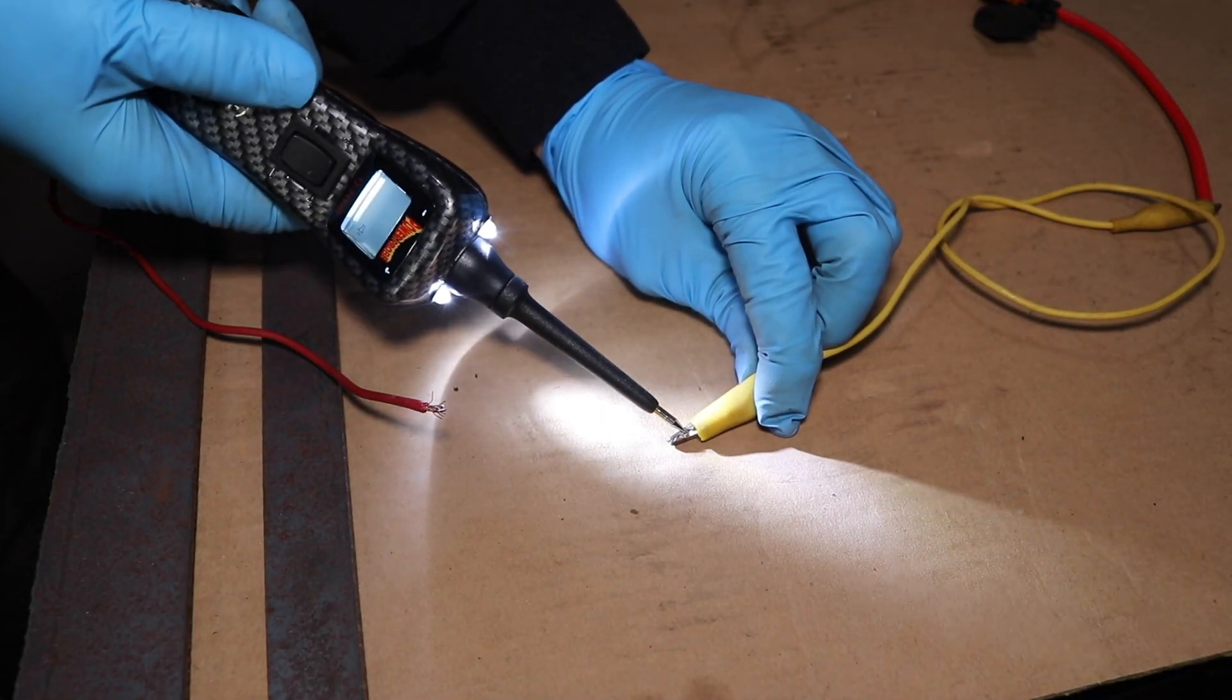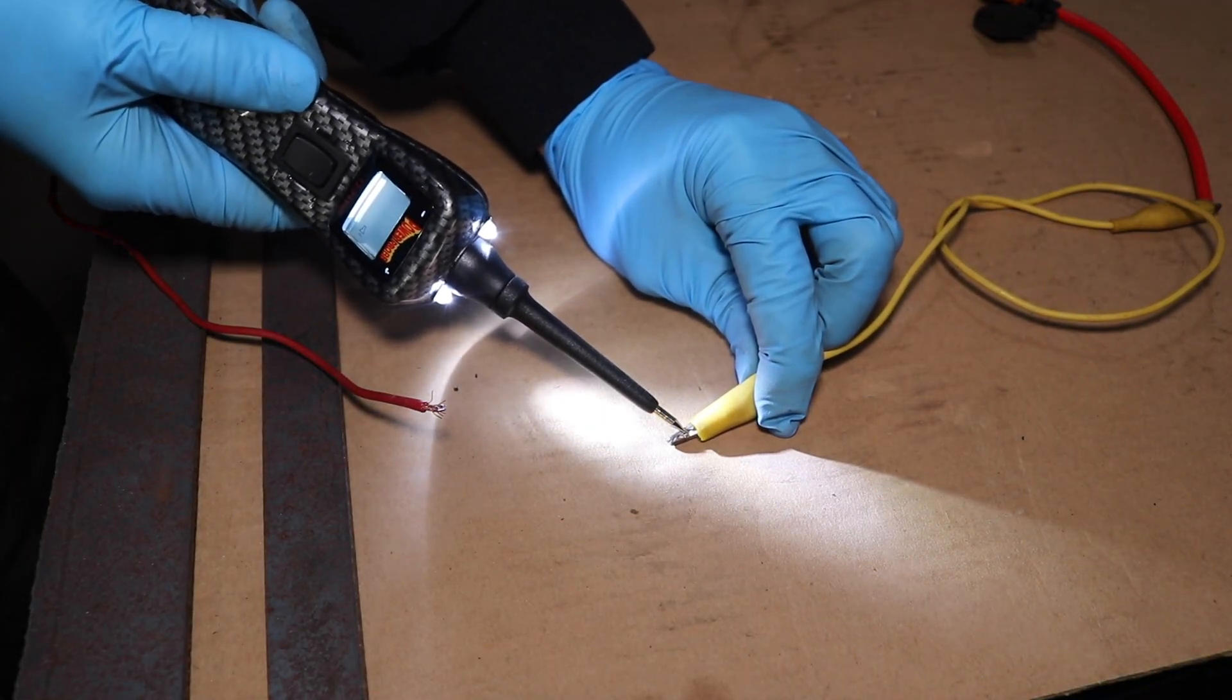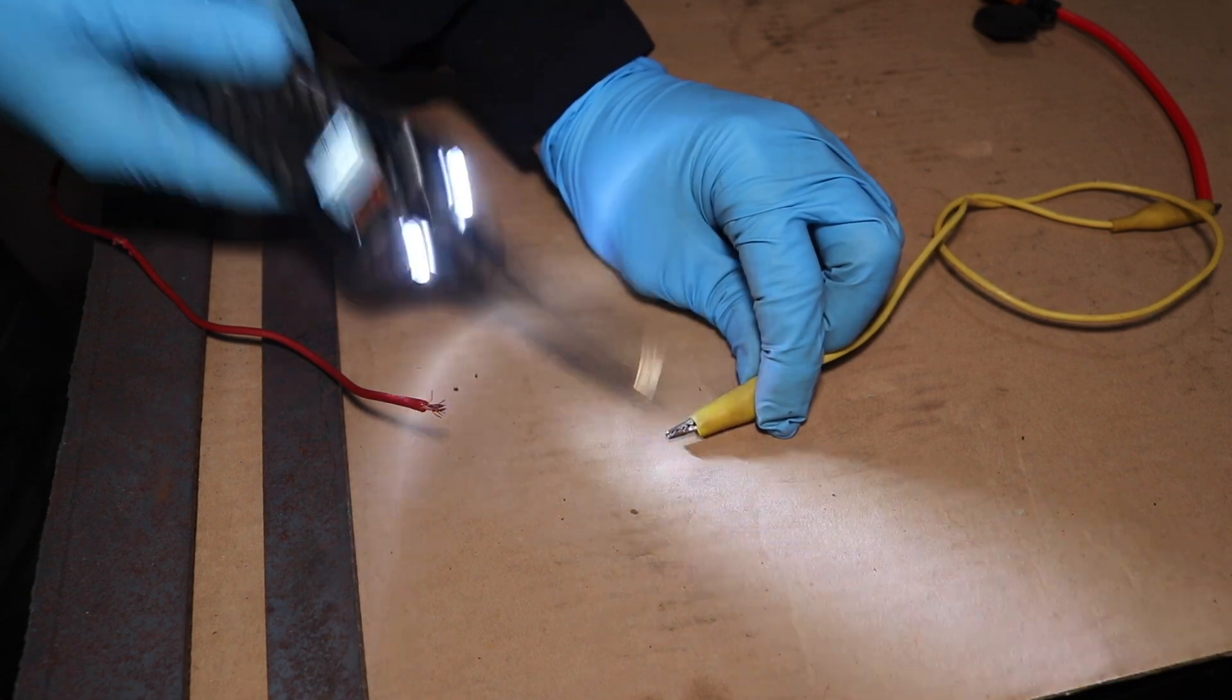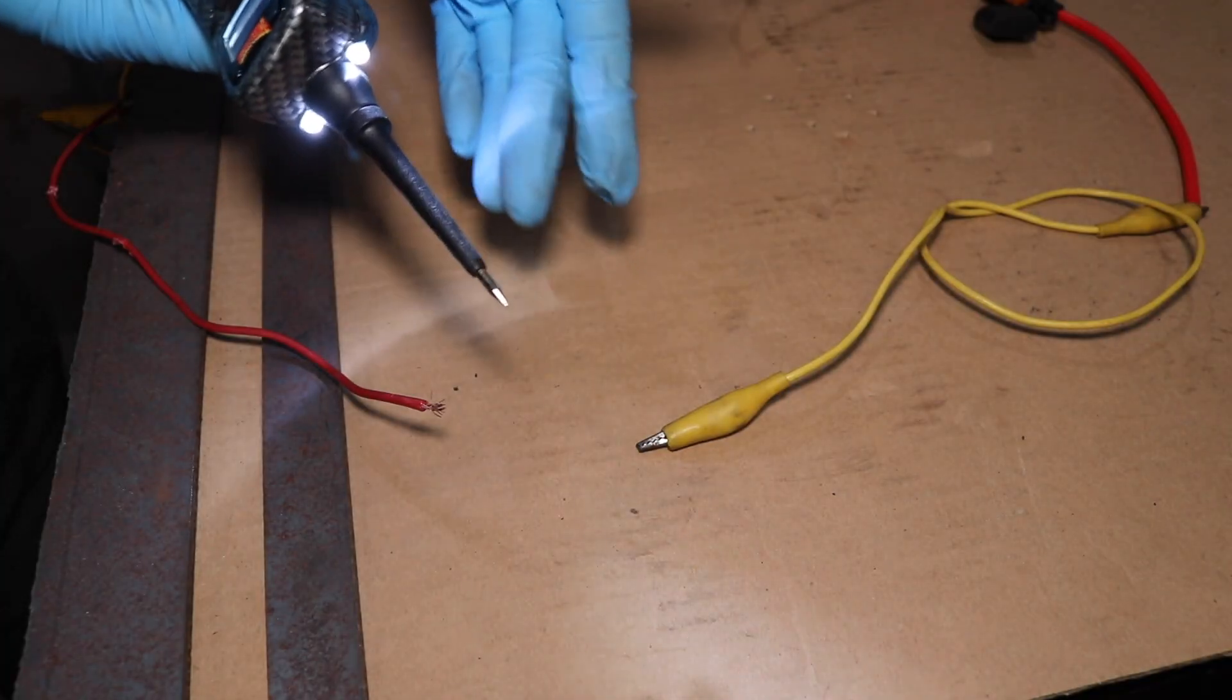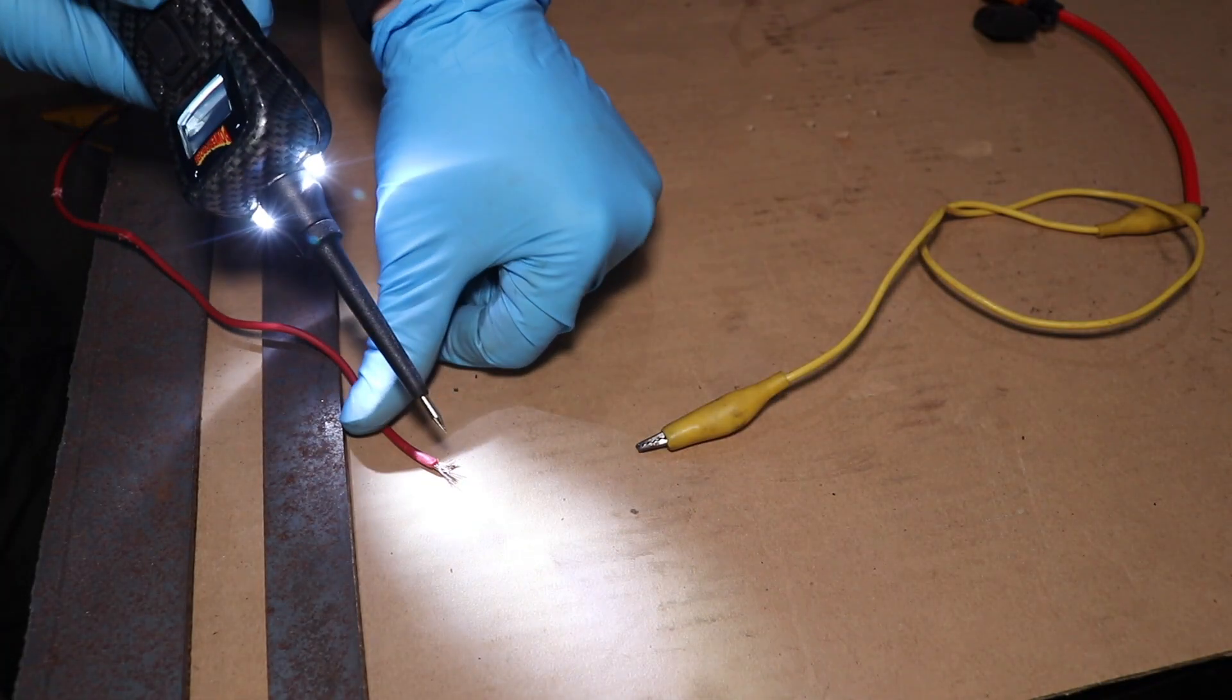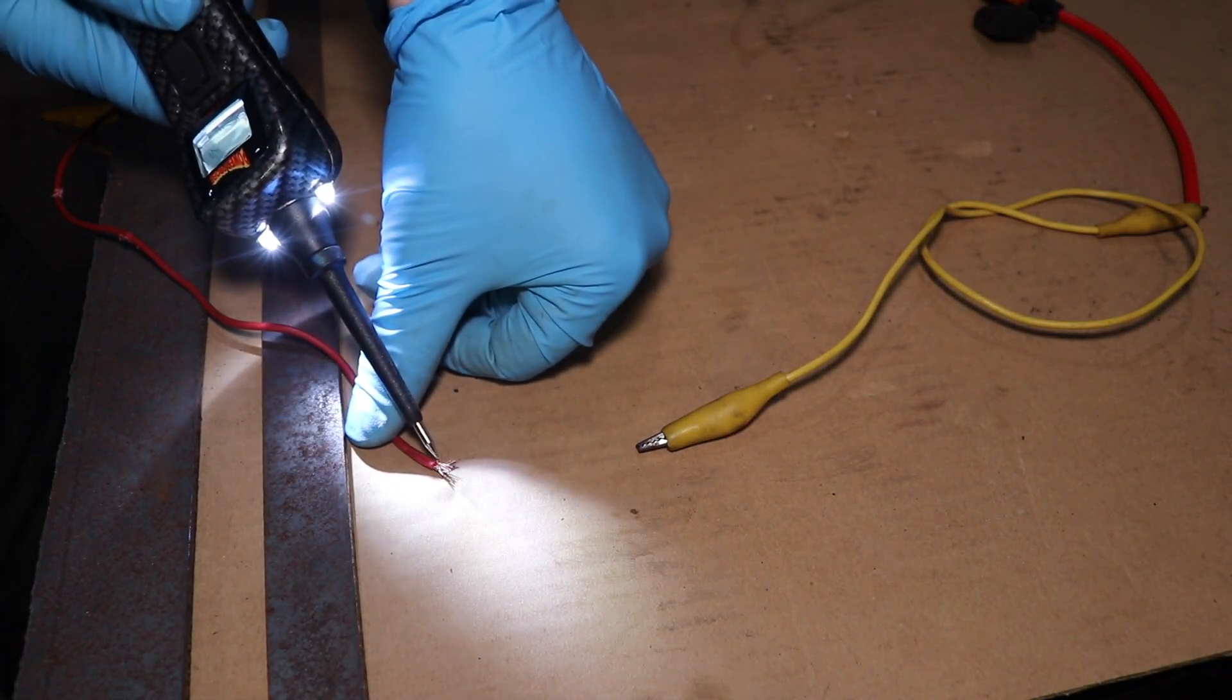If I go back to the fuse, I'm not getting anything, which is good. That means I don't have an issue between this connection and my fuse. From here I can infer that my short is somewhere downstream. Let's confirm by probing the other side of our connection.